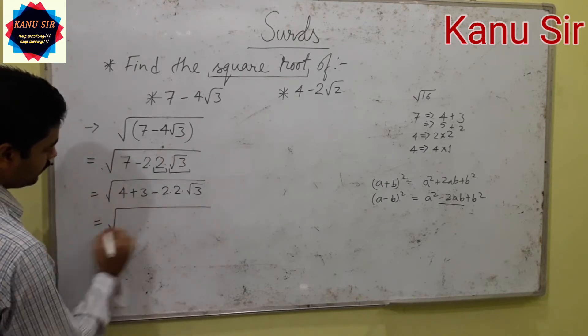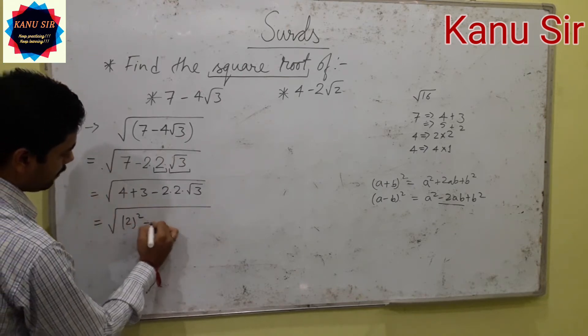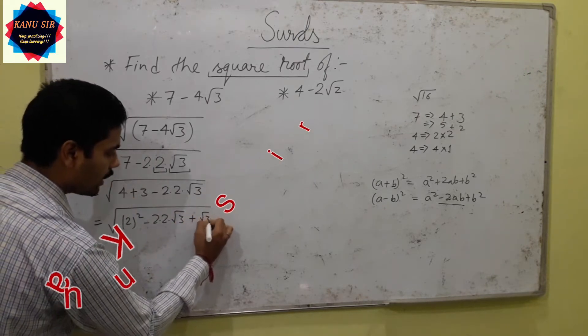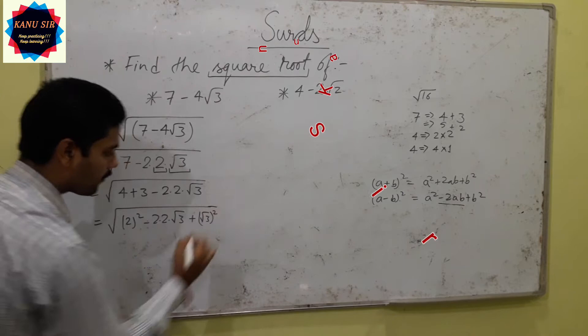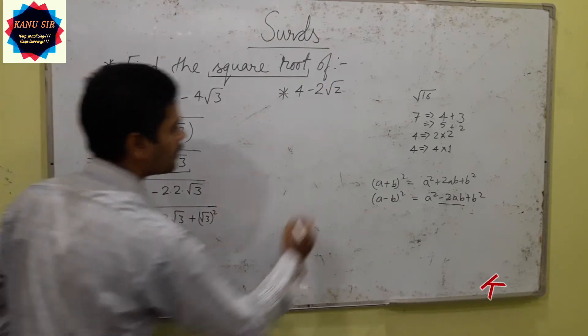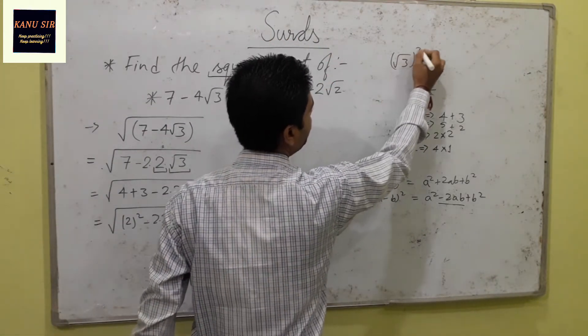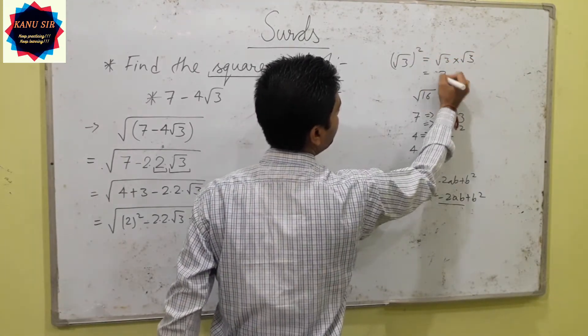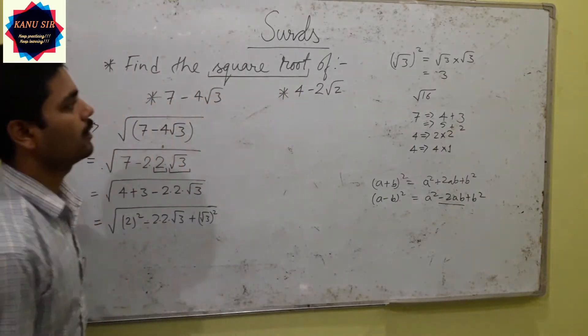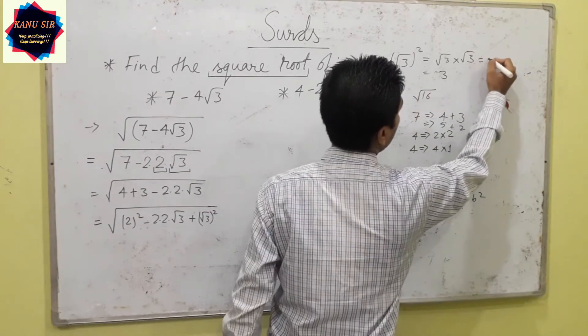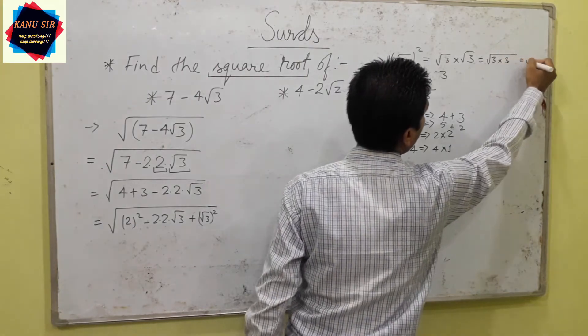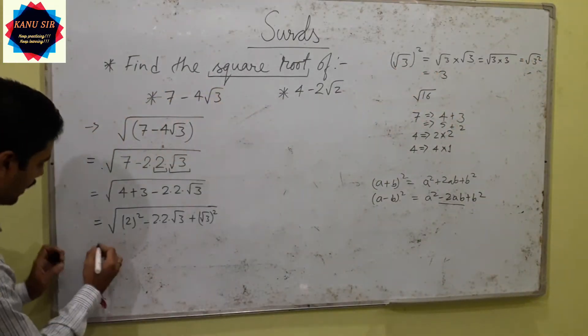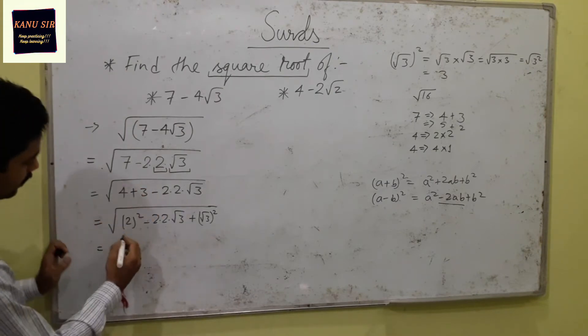Now 4 can be changed to 2², and 3 can be changed to root 3 whole square. If you have confusion about root 3 whole square, you can verify: root 3 times root 3 equals 3, or if still confused, square root of 3 squared equals 3.